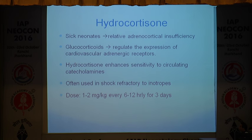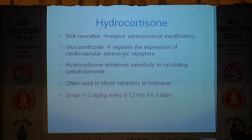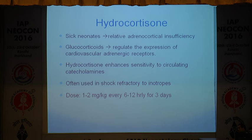Coming to hydrocortisone, we know that sick babies have a relative adrenocortical insufficiency, and glucocorticoids are important to regulate the expression of cardiovascular adrenocortical responses. It is often used as a primary inotrope, but by and large it is used for shock refractory to the first-line inotrope. The dose is 1 to 2 mg/kg, given every 6 to 12 hours for 3 days, and we don't have to actually wean it off.